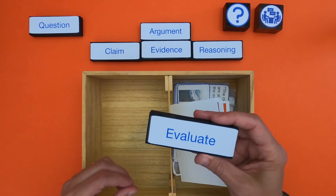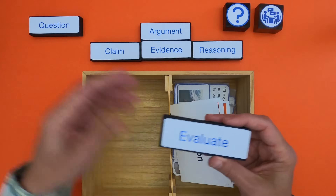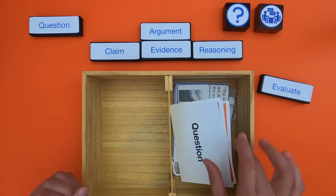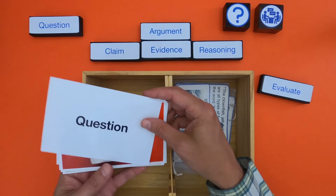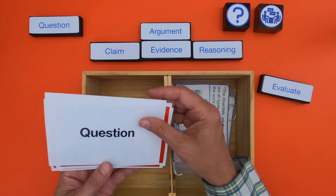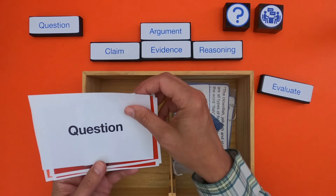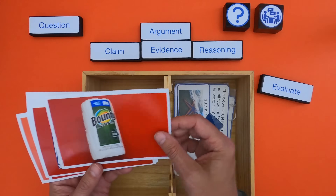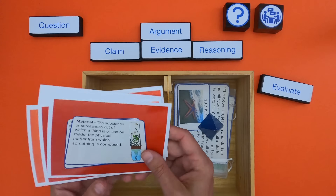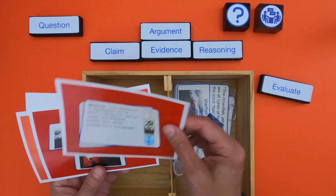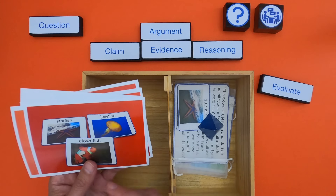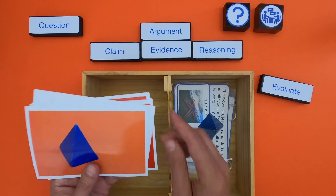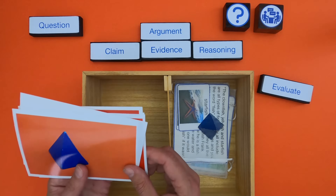Remember an argument has three portions: the claim, which is an answer to a question; the evidence that they're putting forward; and their reasoning. Once you've identified the question, you identify the elements of the argument, and then finally you're going to evaluate it. You can evaluate any of these three parts: claim, evidence, or reasoning. After watching this video you should be able to evaluate arguments around questions like whether Bounty paper towels are absorbent, or where the materials in a plant come from.